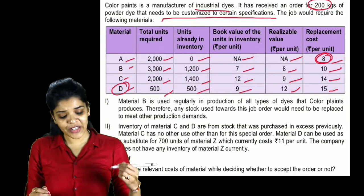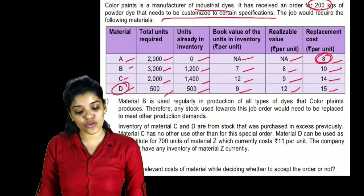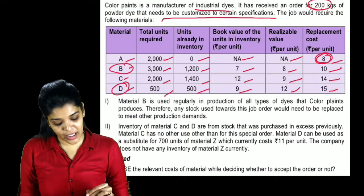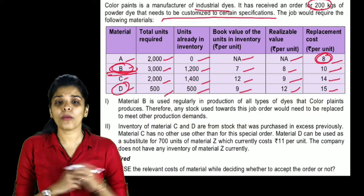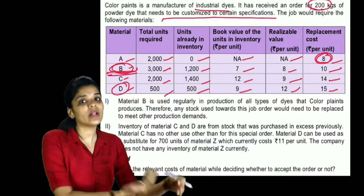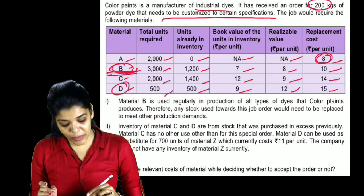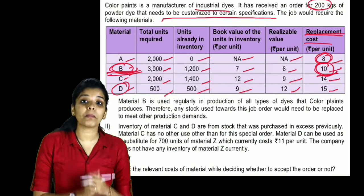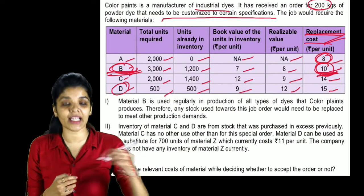Material B is used regularly in production of all types of dyes that Color Paints produces. Therefore, any stock used towards this job order would need to be replaced to meet other production demands. Material B is regularly used in all kinds of dye production, so whatever stock is used for any job will be replaced. So when we take relevant cost for B, it will be replacement cost — Rs.10 per unit.